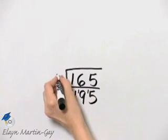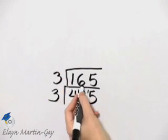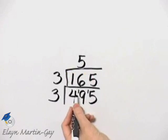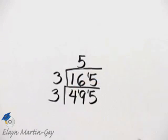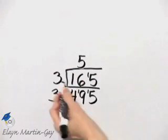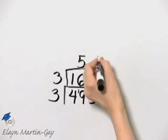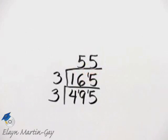Three into sixteen is five times, and that's fifteen, so a remainder of one. And three divides into fifteen five times.